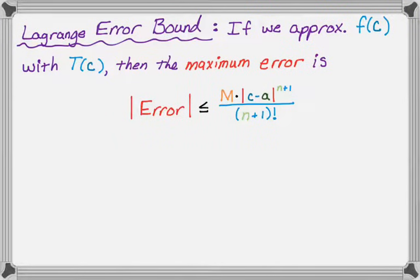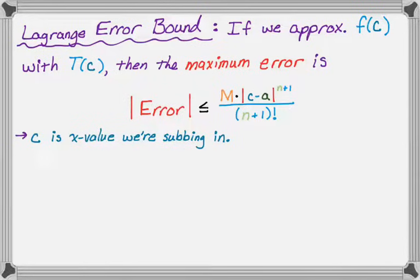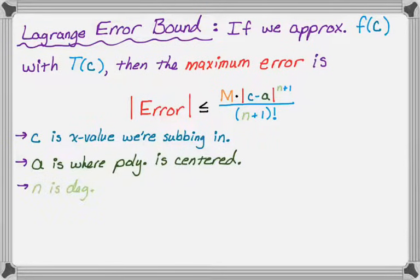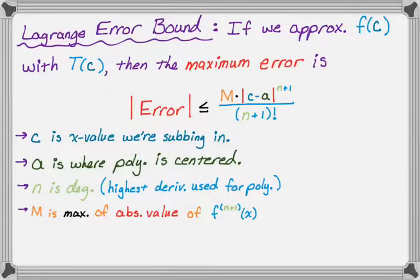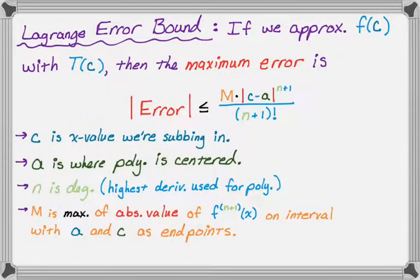Let's make sure you really know everything that's happening. c is the value that we're subbing in — we're approximating f of c. a is the center for the polynomial. n is the degree of the polynomial, and importantly, that's the highest derivative we used for the polynomial. M is the maximum of the absolute value of the (n+1)th derivative on an interval that has a and c as the endpoints. Sometimes a is bigger than c, sometimes c is bigger than a — so a and c are the endpoints, and you just write the interval correctly.